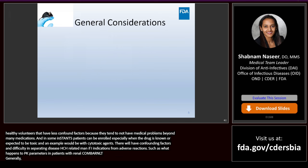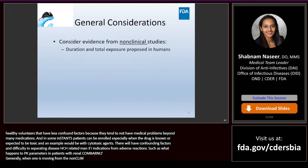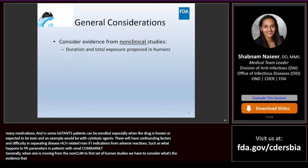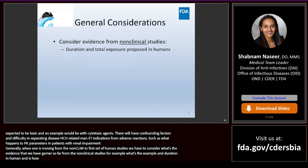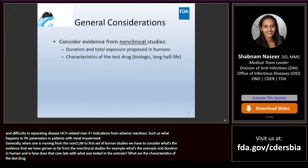When moving from non-clinical to first-in-human studies, we have to consider what evidence we've garnered from the non-clinical studies. For example, what's the duration and total exposure proposed in humans and how does that correlate with what was tested in the animals? What are the characteristics of the test drug — is it a small molecule, is it a biologic, does it have a long half-life?